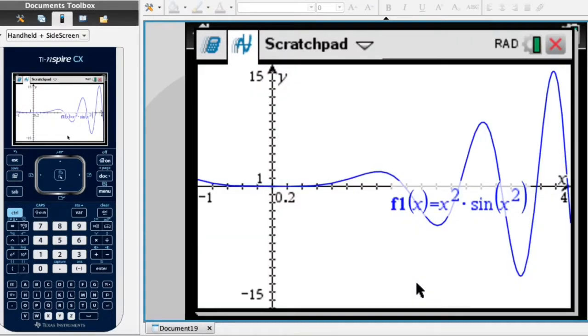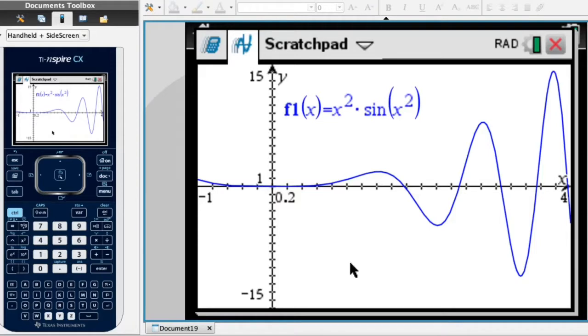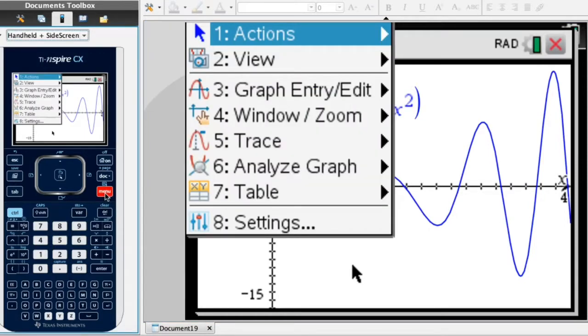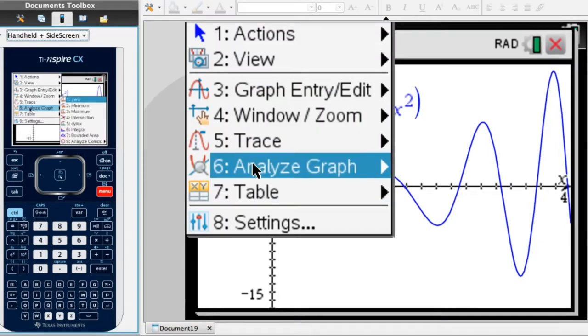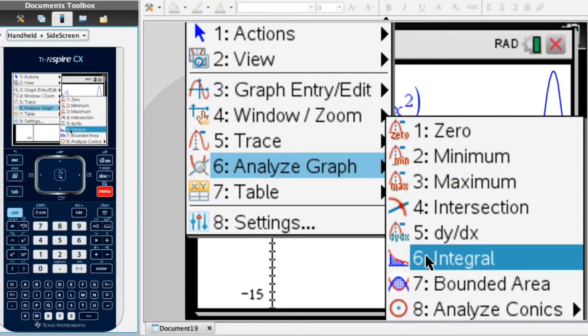We can now see the curve in a much clearer way. And I'll just move this label here to the side. There we go. Alright we're now ready to evaluate the definite integral. To do that I go ahead and click on menu. I then select the sixth option, Analyze graph. I then select the sixth option again, that's integral, and I click on that.